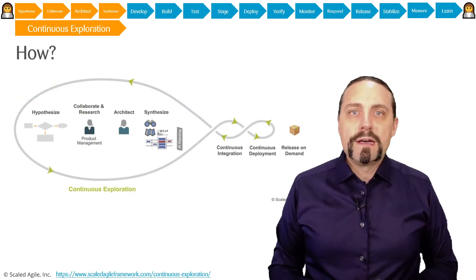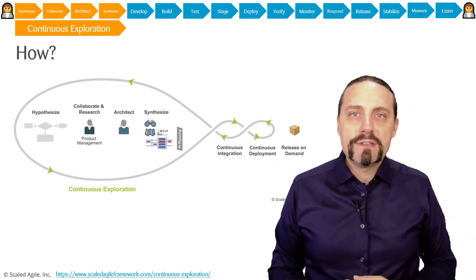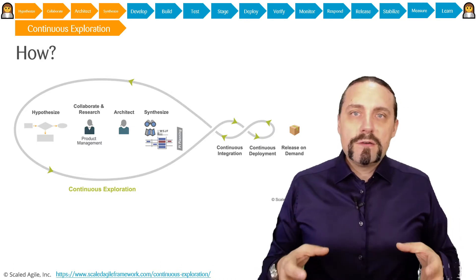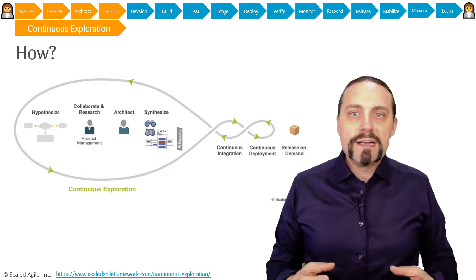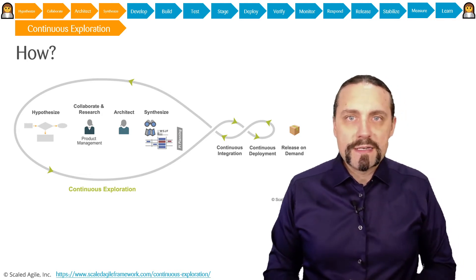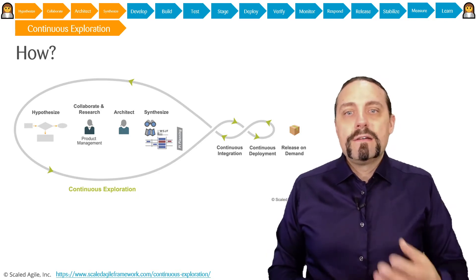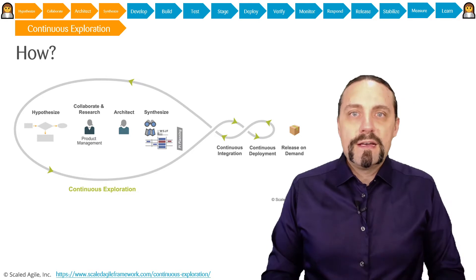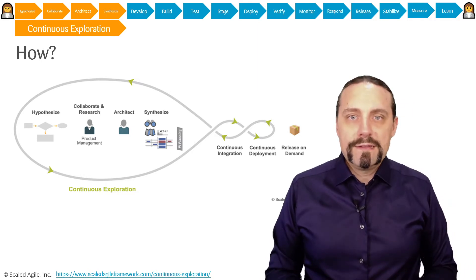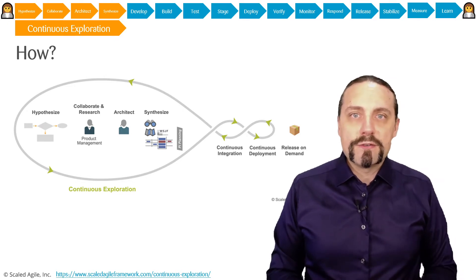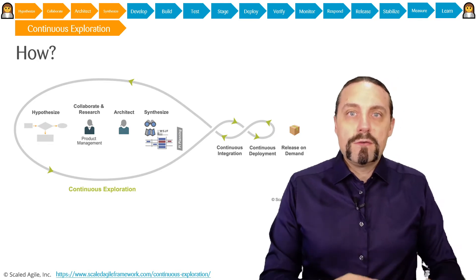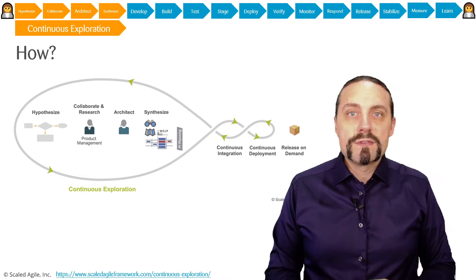So how do we do that? I have created a video for every one of these actions — you can see the links up here. We come into continuous exploration with all of these bright ideas from customer and business side. Then we go into the activity called hypothesize, where we create epics with a hypothesis statement behind each idea. After that we go into collaborate and research, where we do market research about these ideas and customer needs, and we also go to customers, make interviews, and identify the real customer need or the real problem that should be solved.